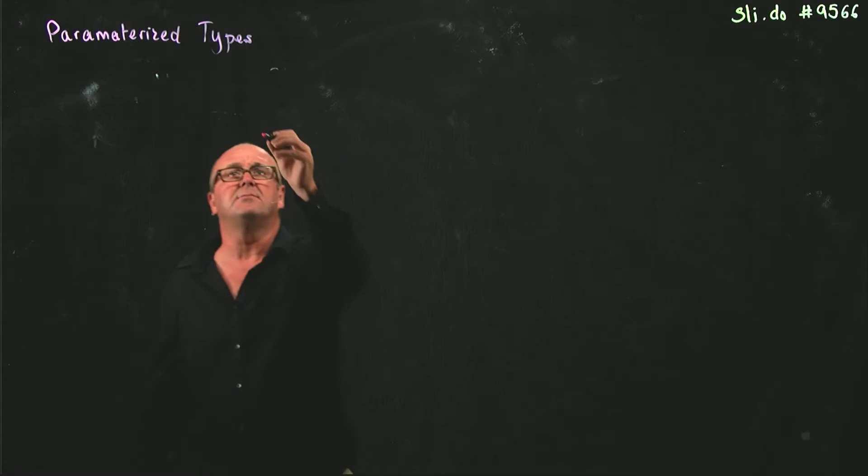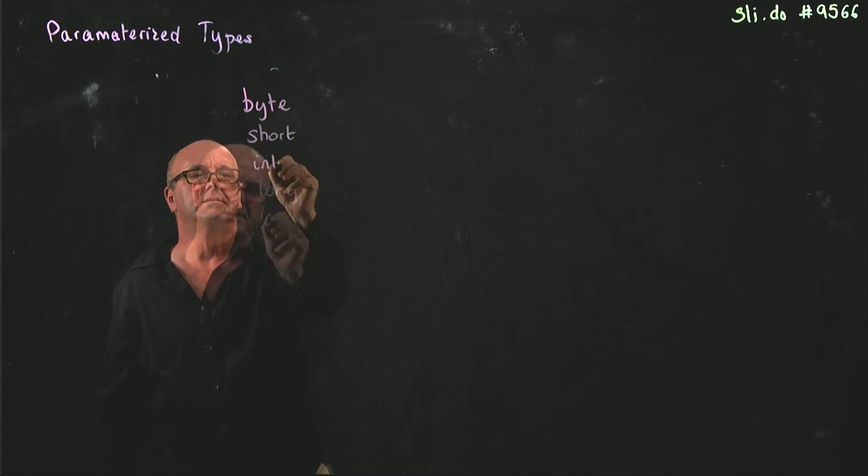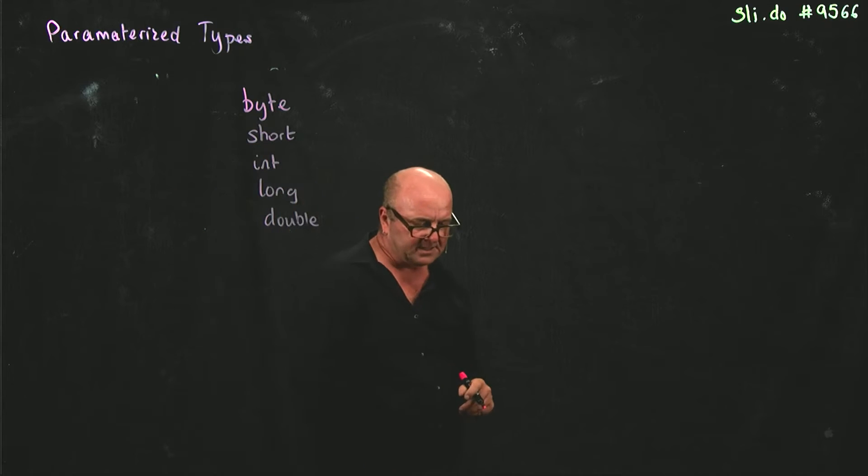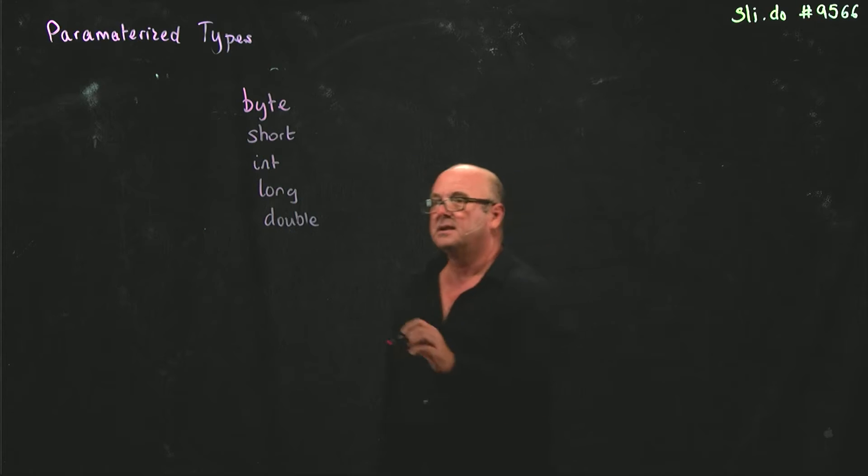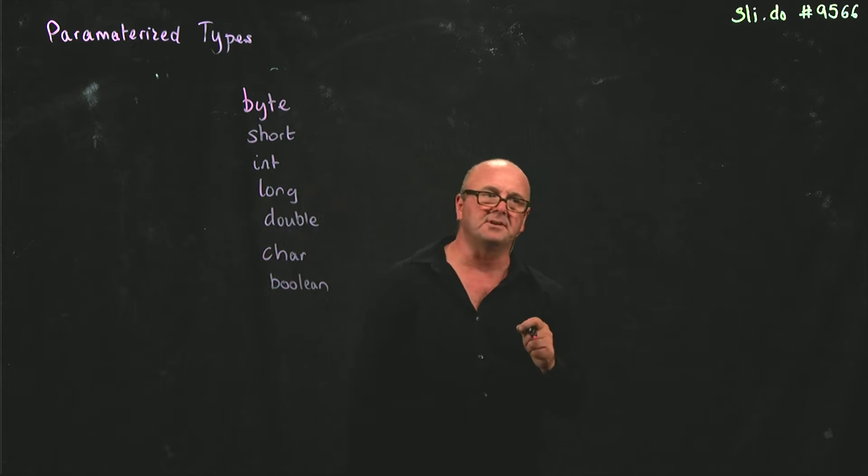You guys are all familiar with the primitive types that Java has. If you define something as one of these primitive types, the JVM sets aside exactly the required amount of memory for that primitive type.